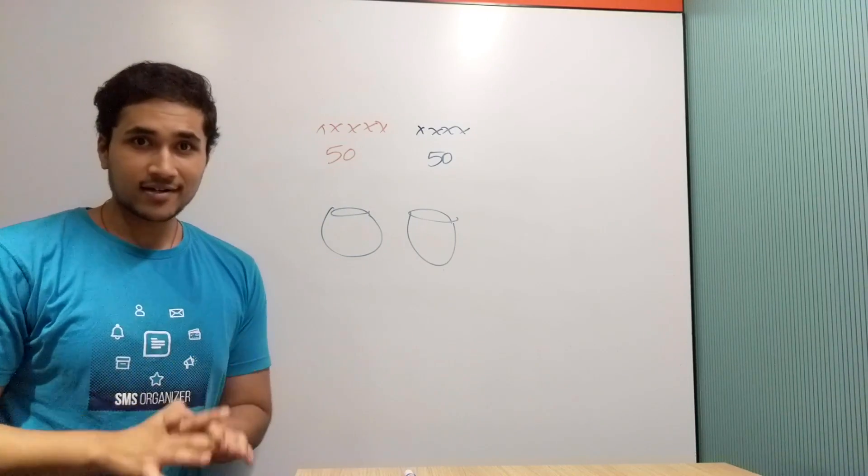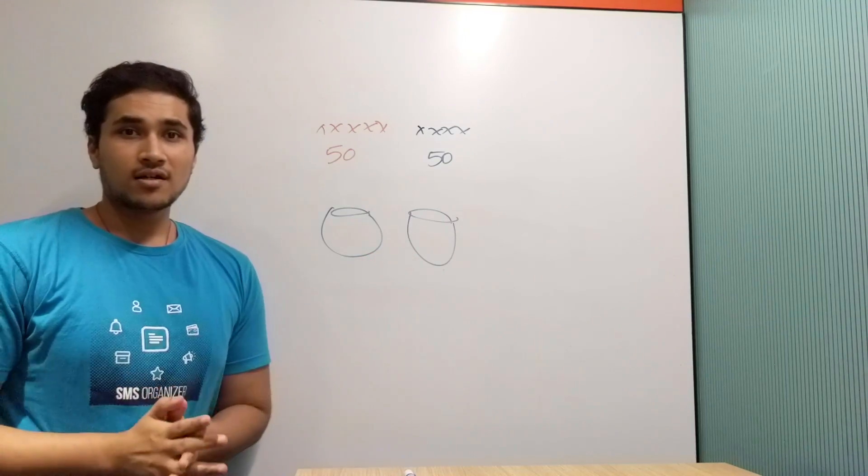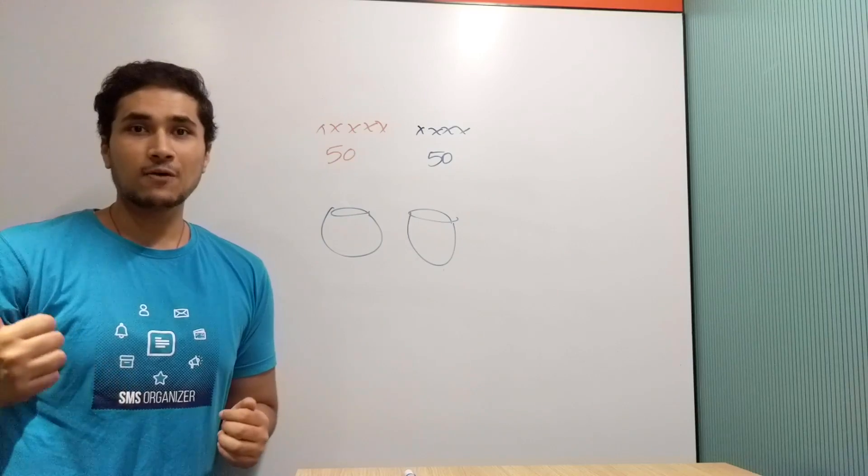Now I will ask Gaurav to place these 100 chits into these two jars in whatever permutation that he wants. But once he does that, I will enter the room and I will pick any chit from any of the jars, and if it's blue I win, and if it's a red he wins.